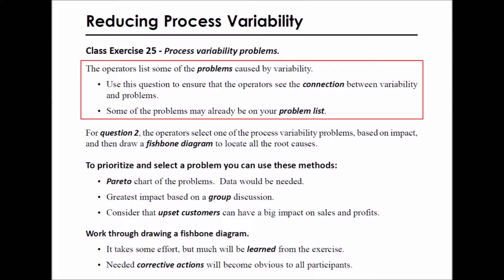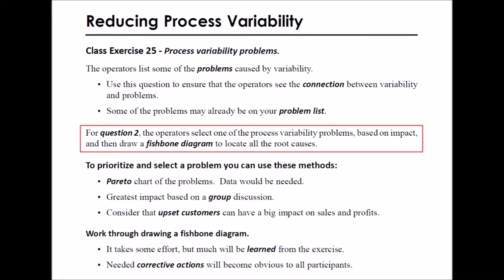In Class Exercise 25, the operators will list some of the problems caused by variability. Use this question to ensure that the operators see the connection between variability and problems. Some of the problems may already be on your problem list. For question 2, the operators select one of the process variability problems based on impact, and then in part 3 draw a fishbone diagram to locate all the root causes.